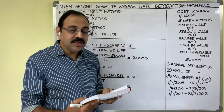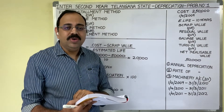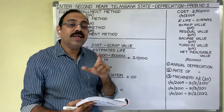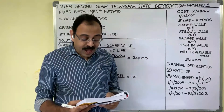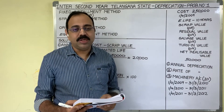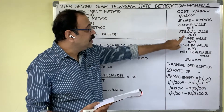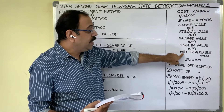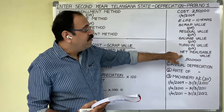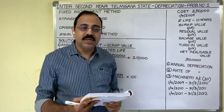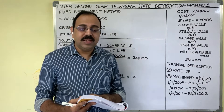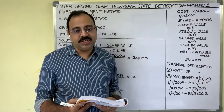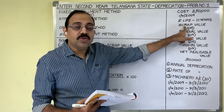The estimated life of the machine is 10 years. Machine life is certain — we cannot use it forever. So we are estimating that we can use that asset for a 10-year period. The scrap value at the end of its life is Rs. 50,000. Scrap value is also known as residual value, salvage value, turn-in value, or net realizable value. Scrap value means when the asset becomes useless after 10 years, we sell it on a scrap basis and estimate how much we will get. Remember, scrap value is also an estimated value.